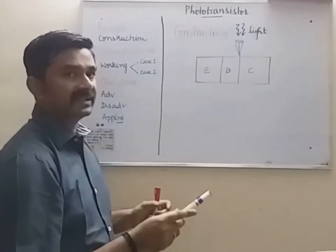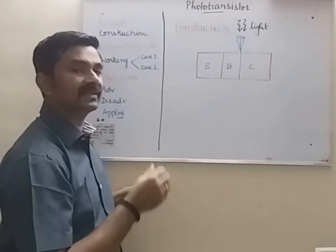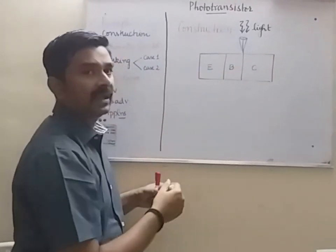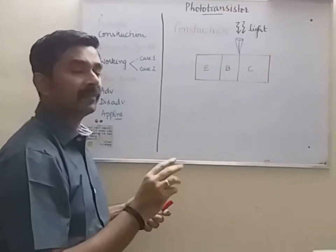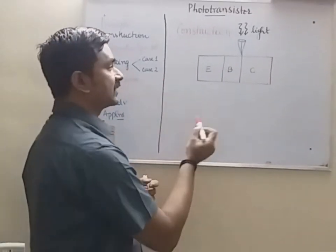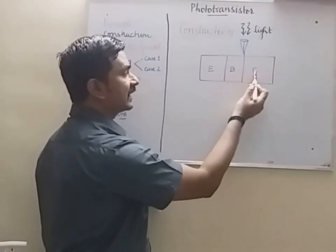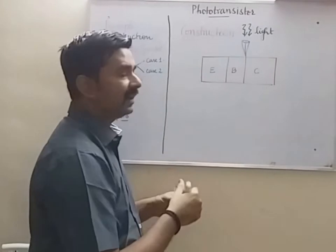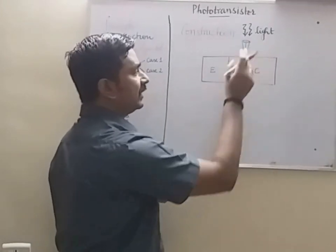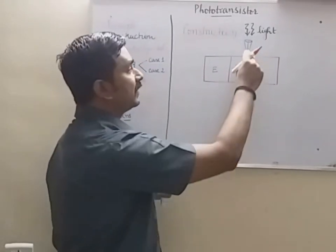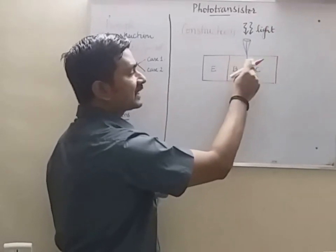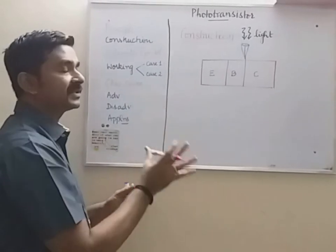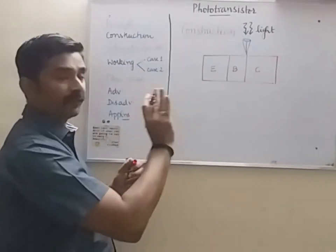A phototransistor is a normal BJT. As a normal BJT has three layers, the phototransistor also has three layers: emitter, base, and collector. The difference between a normal BJT and the phototransistor is that the width — or rather the region — of the base and collector are larger when compared to the normal BJT. Moreover, there is a lens provision in a phototransistor which will focus the incident light on the base-collector junction. This is the construction of a phototransistor.